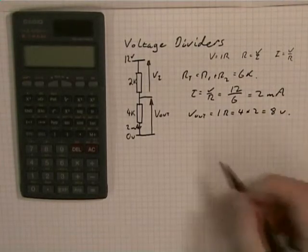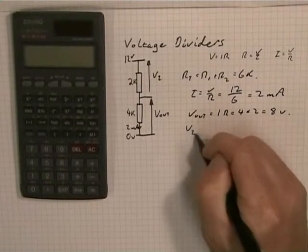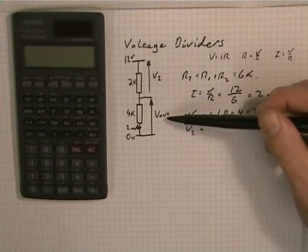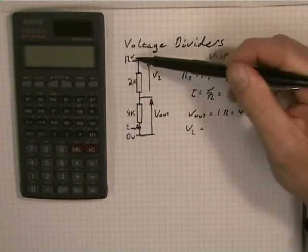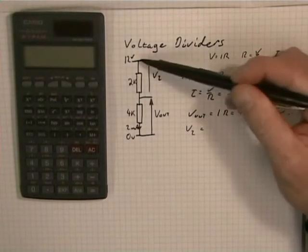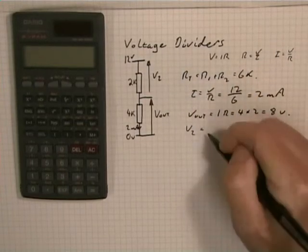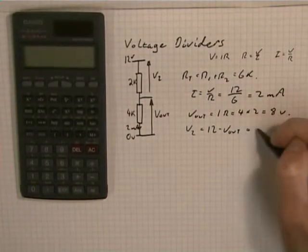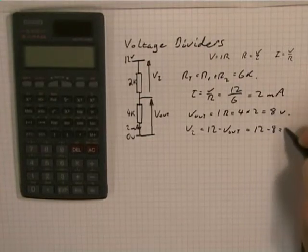If I then want to define V2, I can use Kirchhoff's voltage law. Well, V out plus V2 will equal 12, so V2 will equal 12 minus V out. So that will be 12 minus 8, so that's 4 volts.